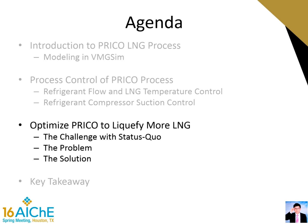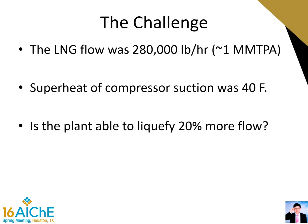After discussing process control, we dive into the optimization of an existing pre-co LNG plant. The plant was designed with a capacity of about one million metric tons per year and has a compressor suction superheat of 40°F. The question is: do you think the plant is able to liquefy an extra 20% flow?